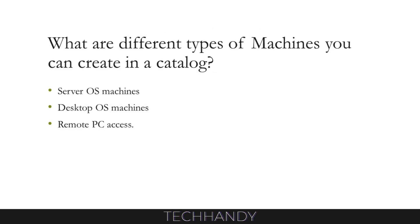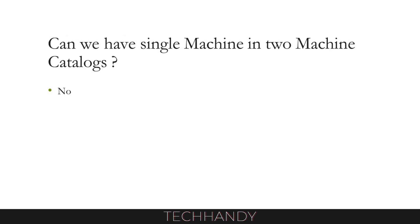What are the different types of machines you can create in a machine catalog? You can create server OS machines, desktop OS machines, or remote PC access. Can we create a single machine in two machine catalogs? The answer is no — this functionality is not supported.